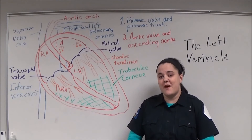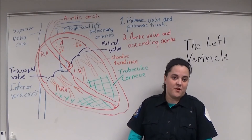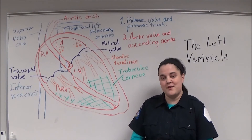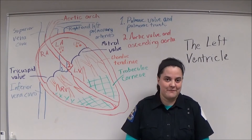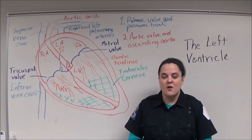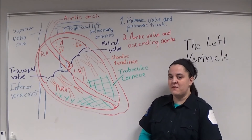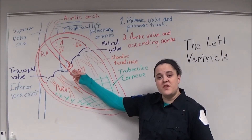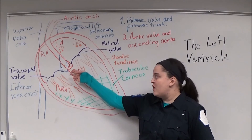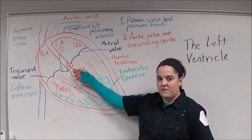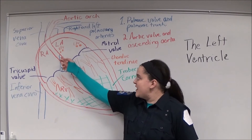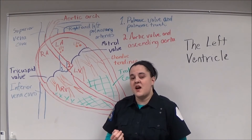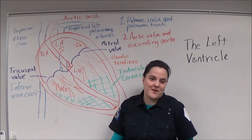The left ventricle is much more muscular because it needs to be able to pump blood to the entire human body. When systole occurs in the left ventricle, blood is forced through the other semilunar valve, known as the aortic valve, up through the ascending aorta, where it's then distributed through the entire body by various arteries.